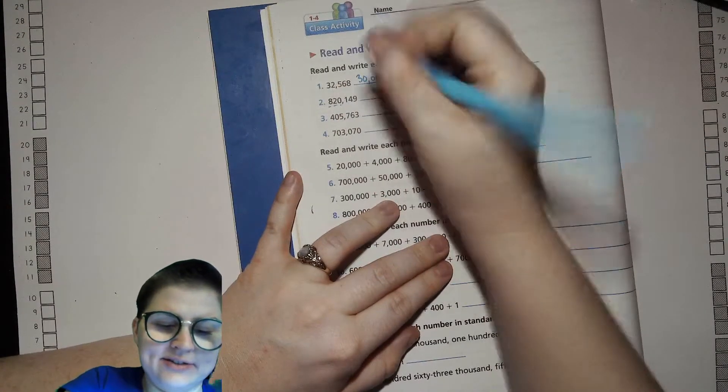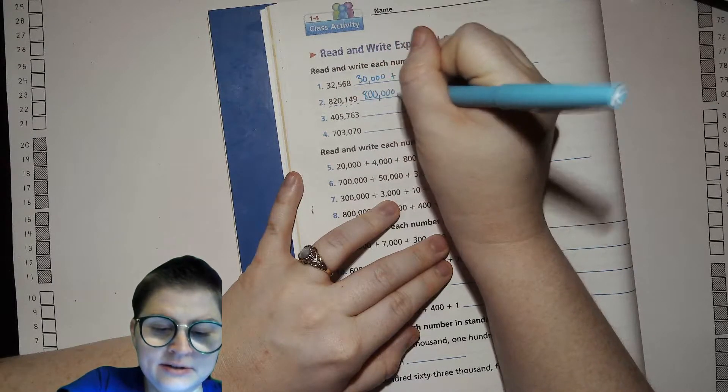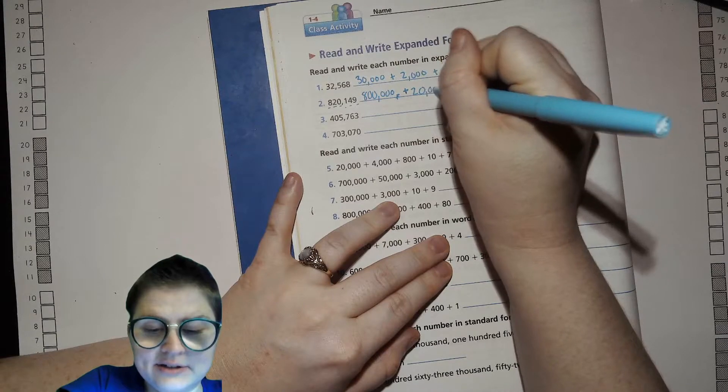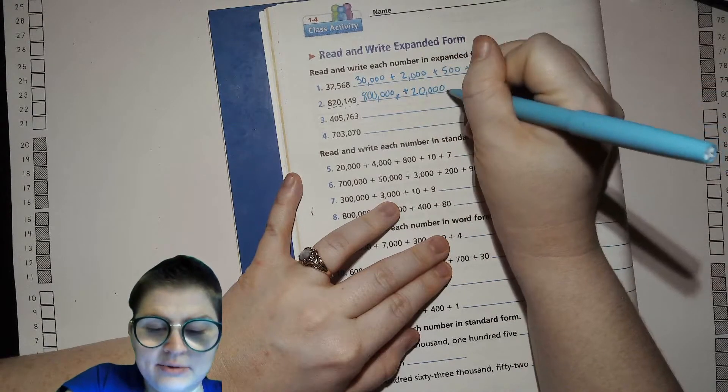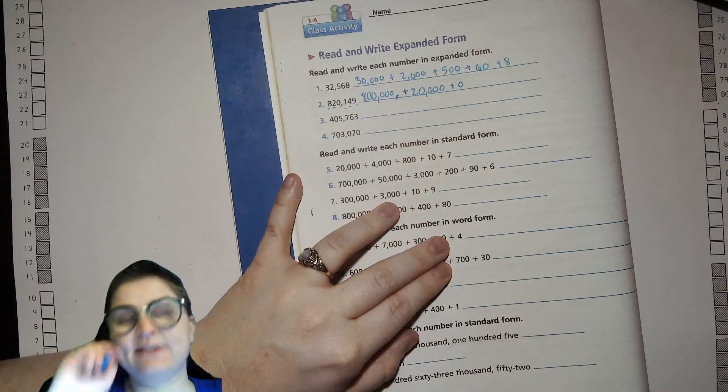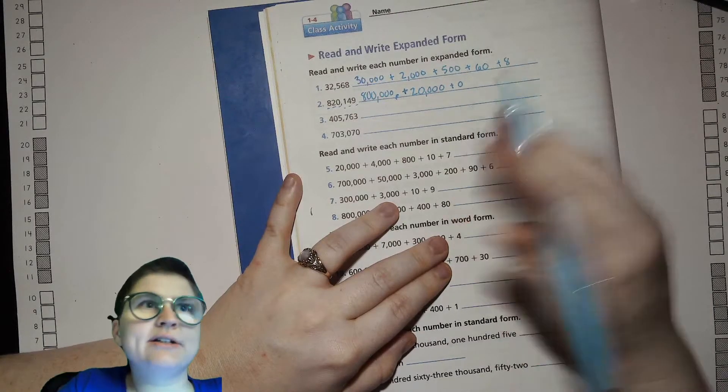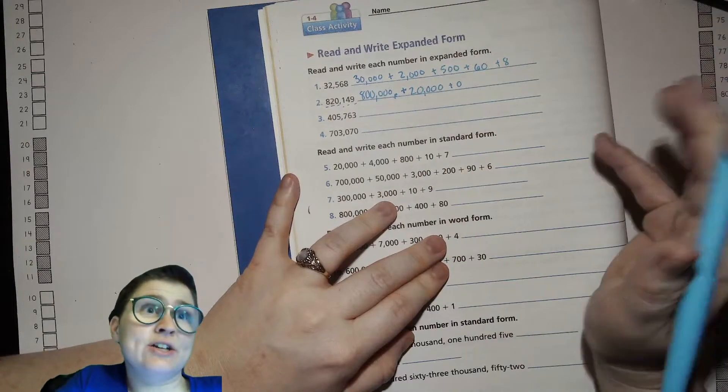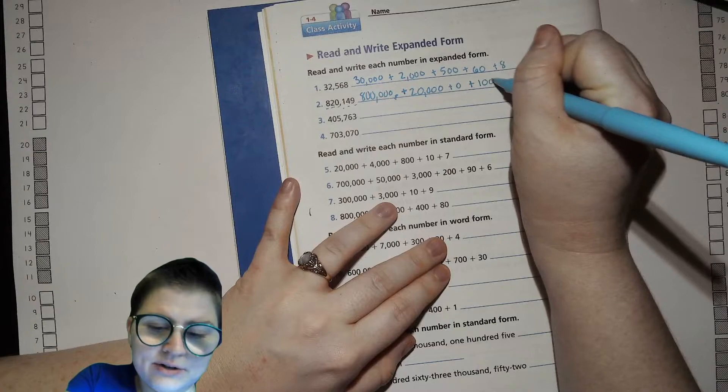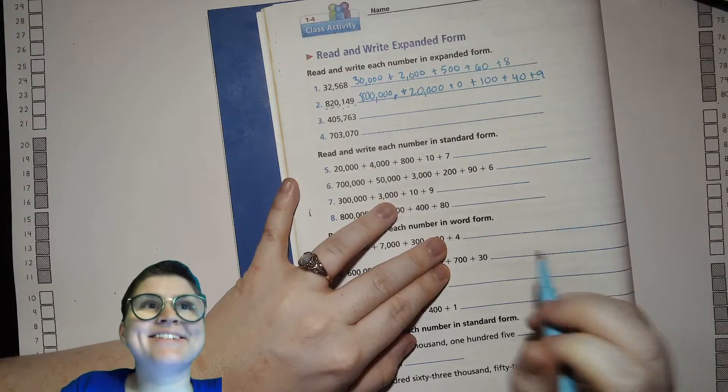820,149. So 800,000 plus 20,000 plus, I'm going to put zero there because there's nothing in the regular thousands place, but we are doing expanded form. If you don't put a zero there, it's still mathematically correct because adding zero doesn't change anything. So plus 100 plus 40 plus 9.